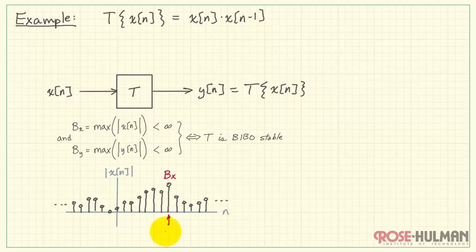This is our maximum input value of the sequence, and it's finite. Let's also say that this occurs at the specific time, n naught. Now, the system is always operating on the current input times the previous input.